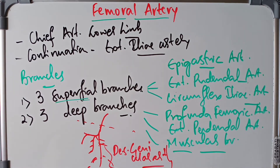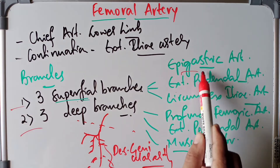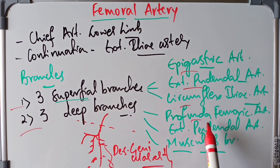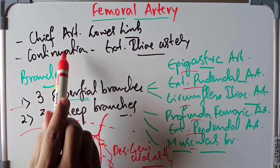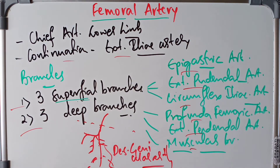So to summarize the femoral artery: it gives three superficial and three deep branches, it is the chief artery of the lower limb, and it is a continuation of the external iliac artery. Now we will discuss the femoral vein and its tributaries. Please stay till the end of the video, and if you're new here you can always subscribe.